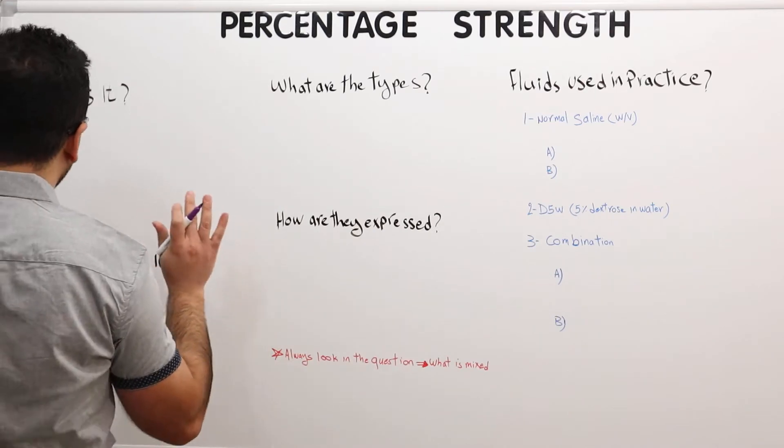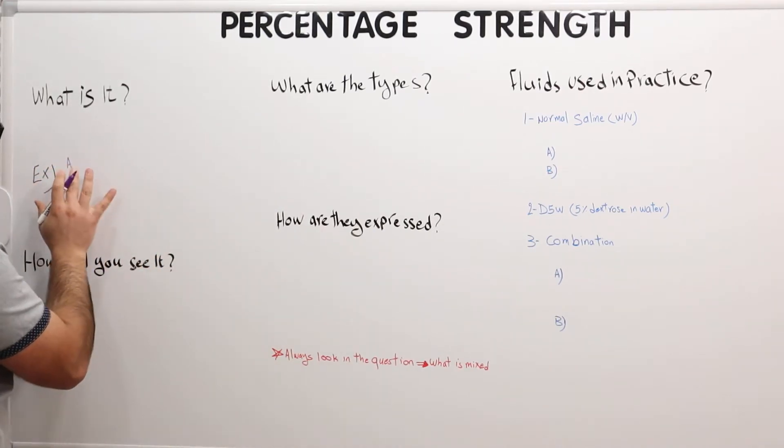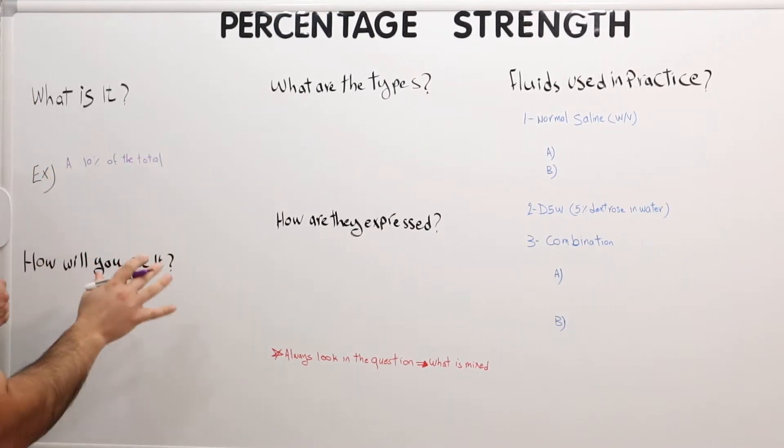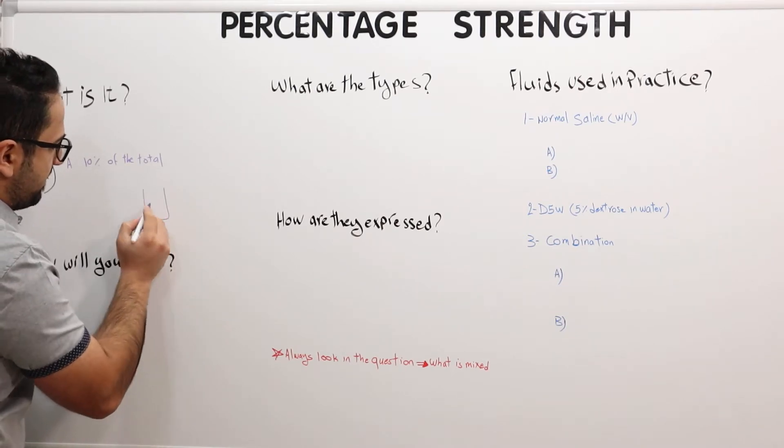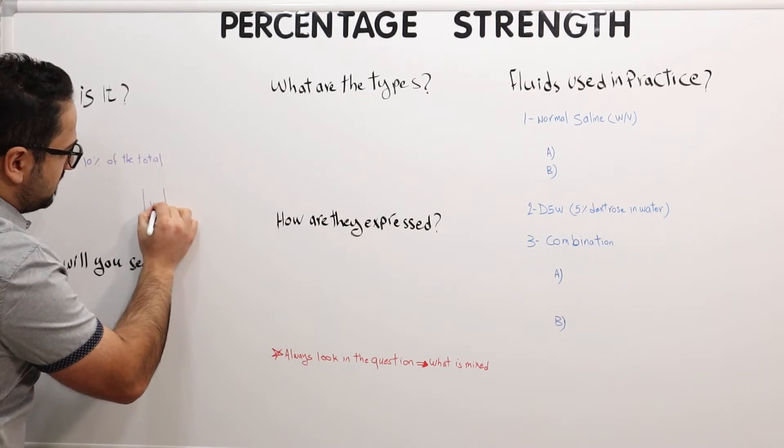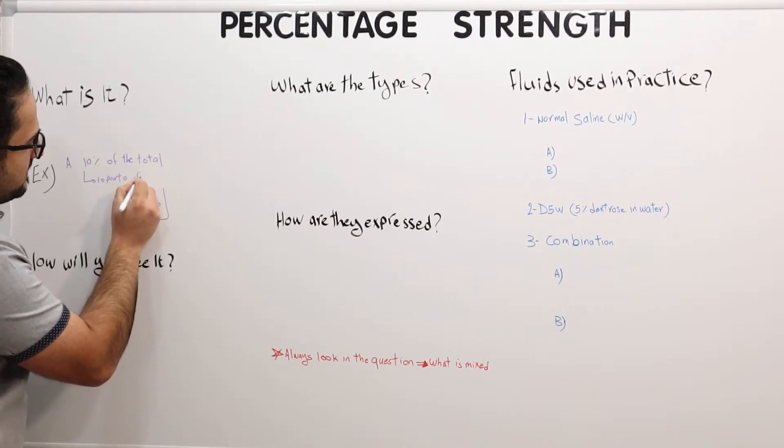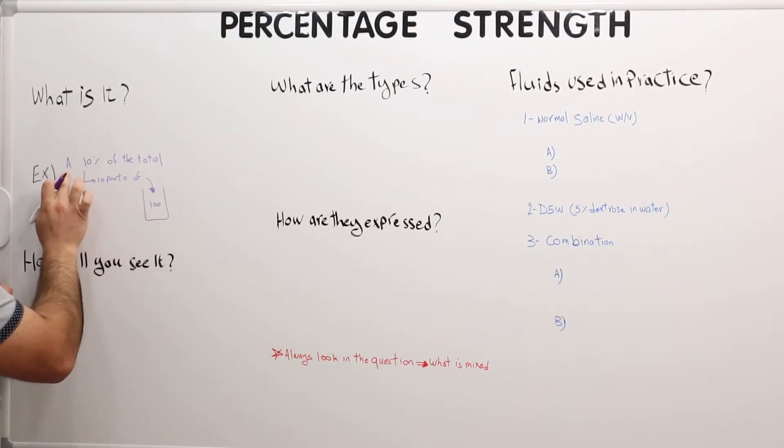Let's look into an example. Let's say that we have product A. Product A is 10% of the total amount. What this means is product A has 10%, so the total amount is always going to be 100 percent total amount. There is 10%, which means that there are 10 parts of this hundred, and these 10 parts are product A.